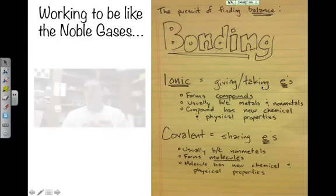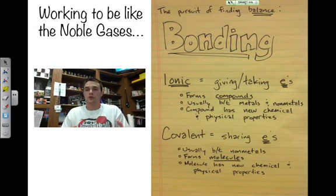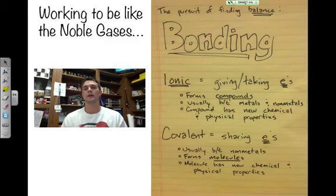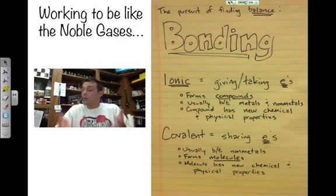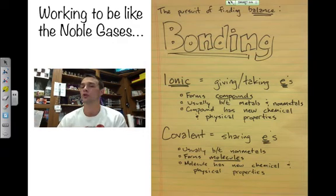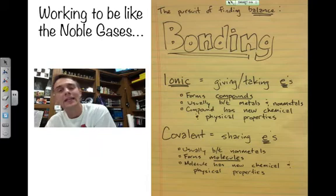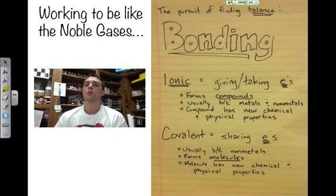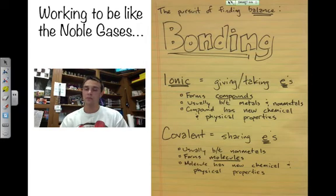So we're always working to be like these noble gases. Elements are constantly under the pursuit, constantly pursuing balance. They're trying to find balance here. They bond with other elements in two ways: ionic or covalent bonding. First one, ionic bonding, typically results in weaker bonds. The two elements, or two or more elements that may be working together here, are usually metals and non-metals. Ionic bonding is a giving and or taking away of electrons. When these elements bond, they form compounds. These compounds have brand new chemical and physical properties.